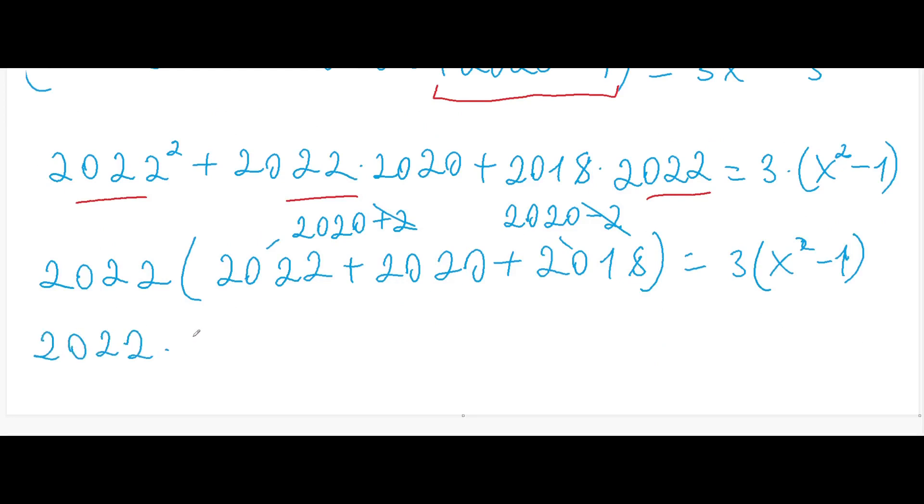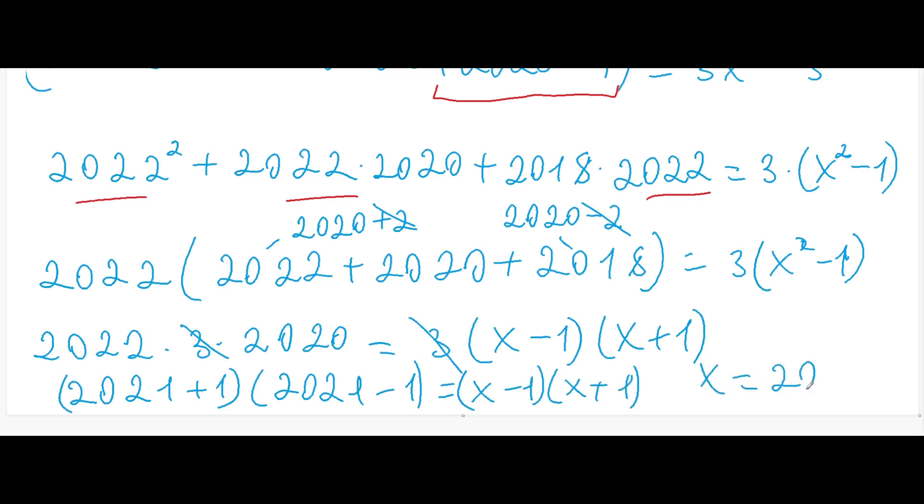Because 3 times 2020 gives us in the brackets 3 times 2020, and it will equal to 3 times x minus 1 times x plus 1. We can divide both sides by 3 and now we can get that this expression will give us 2021 plus 1 and 2021 minus 1. In this way it's visible that x is equal to 2021 and this is our answer.